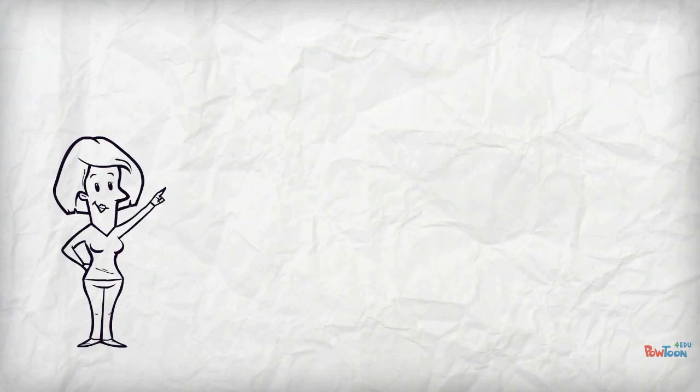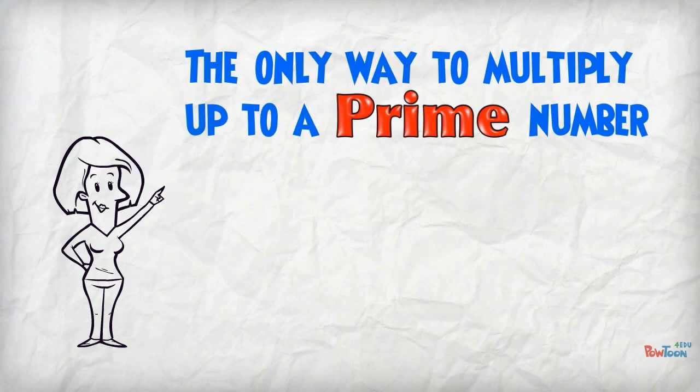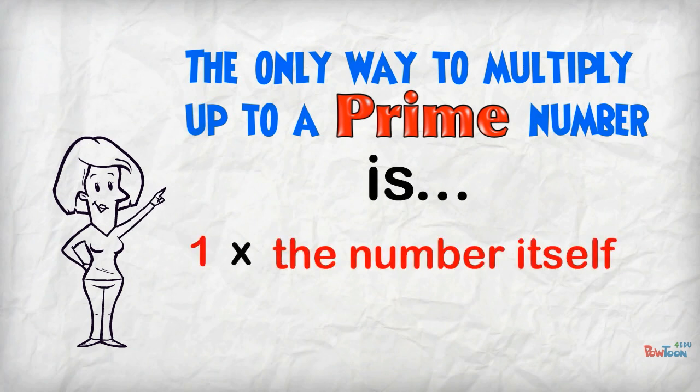So we know that the only way to multiply up to a prime number is to say 1 times the number itself.